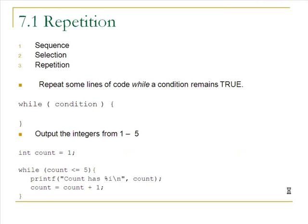We've talked about sequence and selection in previous segments. The sequence of statements is just executing them from top to bottom one by one, and selection or selective execution of statements is using if, if-else, or switch. In this segment, we're going to look at how to express repetition, which means to repeat some lines of code over and over while a condition remains true.